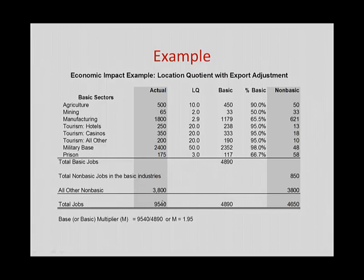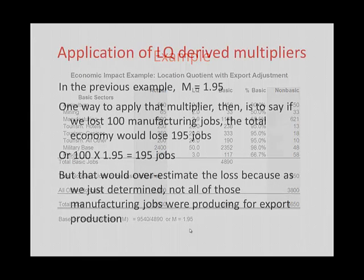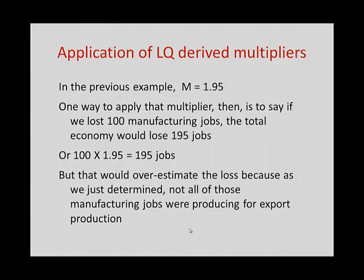We calculate the new multiplier the same way: total employment divided by basic sector employment gives a multiplier of 1.95. That means for every basic job in the regional economy, there are 0.95 other jobs — or for every 100 basic jobs, there are 95 other jobs in the regional economy. One way to apply that multiplier: if we lost 100 manufacturing jobs, the total economy, once those multiplier effects work through, would lose a total of 195 jobs — the original 100 basic jobs plus 95 other jobs.